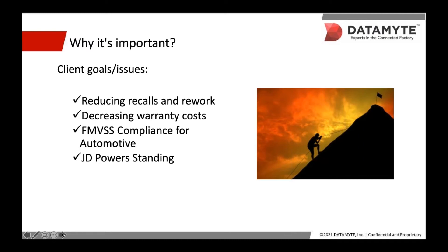Among these are reducing recall and rework that affect the company's bottom line, decreasing warranty costs that can be exponential as products move further along the distribution chain, FMVSS or Federal Motor Vehicle Safety Standard for automotive, and J.D. Power standings. It is always good to avoid lawsuits and set up preventative measures to minimize costs and liability.